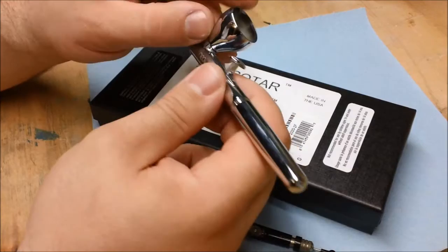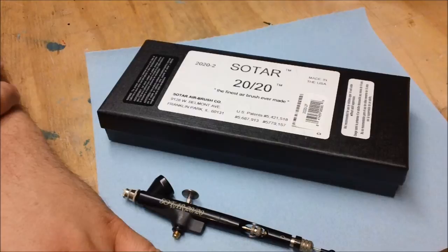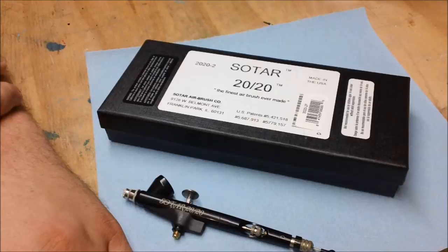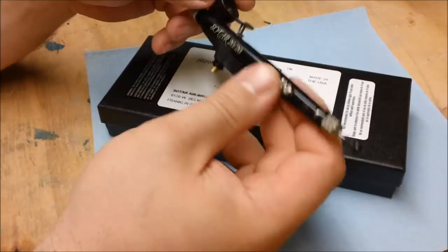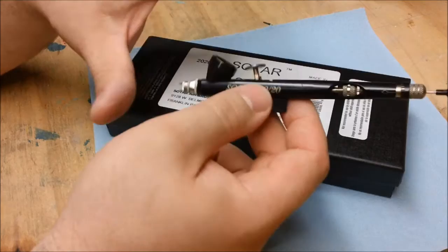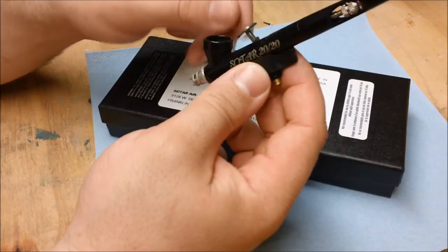I found a steal on the Sotar. I think when these guys first came out they were upwards of three or four hundred dollars. I still see some websites that sell these for $180 to $200, and I was able to purchase mine for about $85 on Amazon. So I decided to snatch one up. This is the Sotar 2020 dash 2F model. The only difference between this and the regular Sotar is the cup size. It has a little bit larger cup size so you can get more painting in between refills.